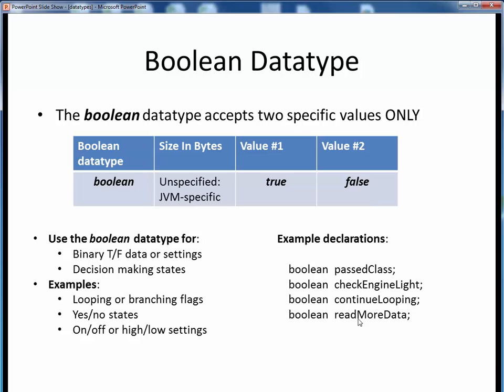Again, Boolean variables can store only two possible values, true or false, and nothing else.